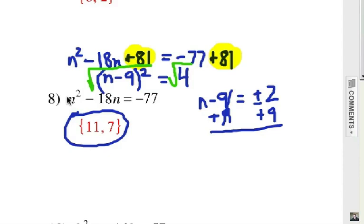So, I have to add equal things. Now, minus 77 plus 81 is 4 and then of course I have to take the square root of each side. And remember the square root of 4 is not just a positive 2, it could also be a negative 2. Final step is to add 9 to get n by itself.